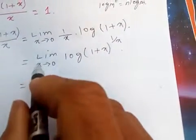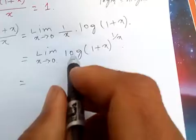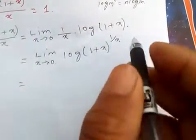In the previous video I have proved that limit x tends to 0, 1 plus x to the power 1 by x is e.